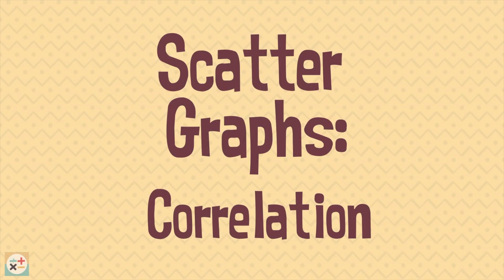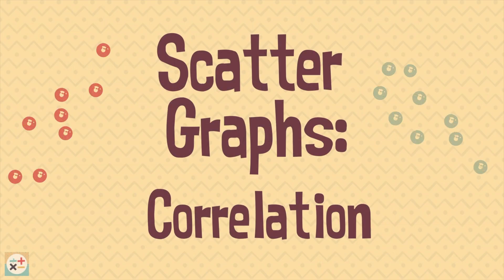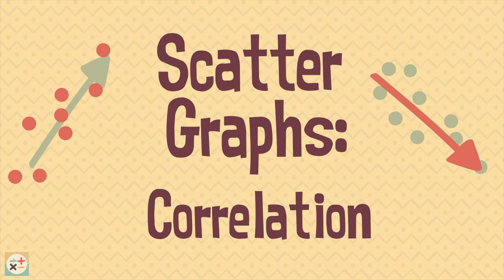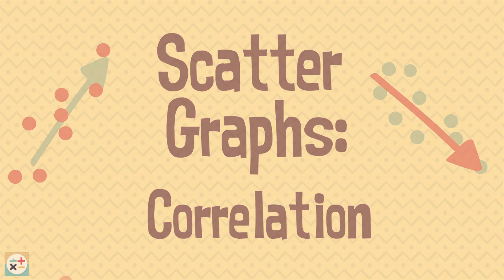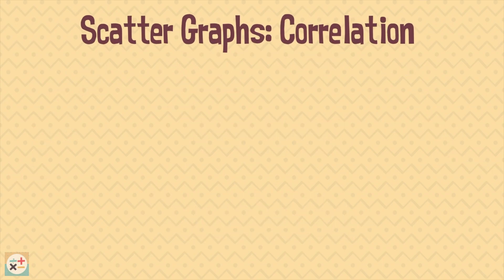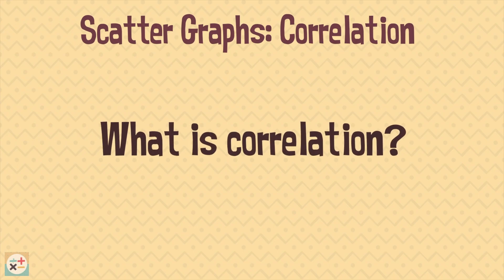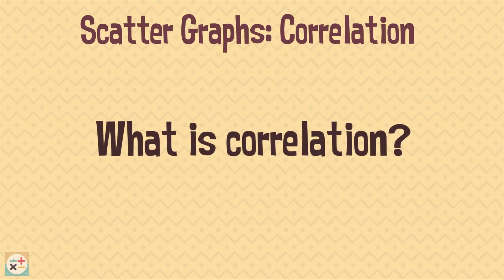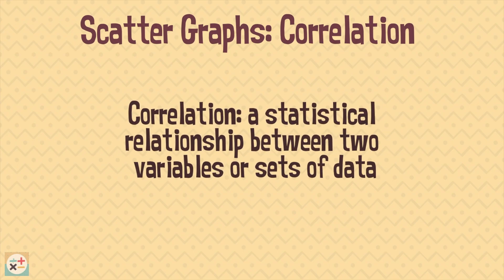Next, we are going to look at the different types of correlation we can determine from scatter graphs. What is correlation? Correlation means how closely two sets of data are related.